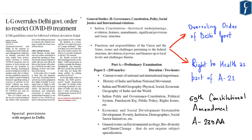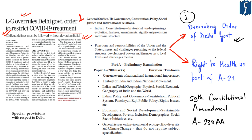The first news to be discussed appears on page number one. It says LG overrules Delhi government order to restrict COVID-19 treatment. ICMR guidelines — that is Indian Council of Medical Research guidelines — must be followed without deviation, as per the Lieutenant Governor of Delhi. Now this news highlights two aspects: first, the overruling of the order of the Delhi government which stated that only residents of Delhi shall be treated for COVID-19 symptoms.